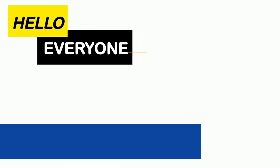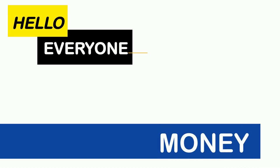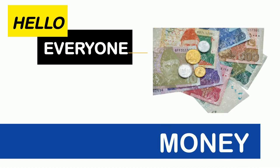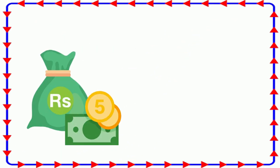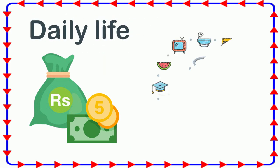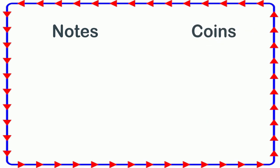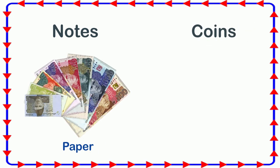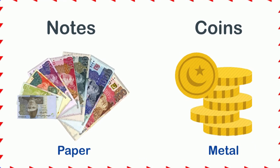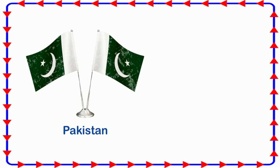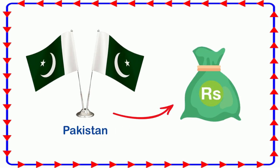Hello everyone! Today's topic is money. We will be learning about what type of money is available in Pakistan and how we use it to buy things. We use money in our daily life. As you have learned in previous grades, there are two forms of money that we use: notes and coins. Notes are made of paper and coins are made of metal. In Pakistan, money is calculated in rupees.